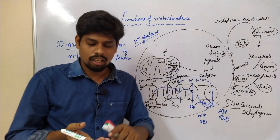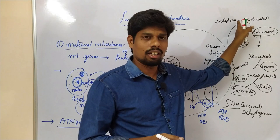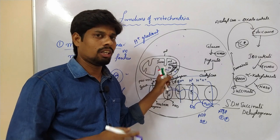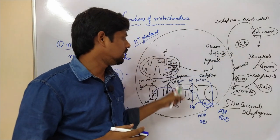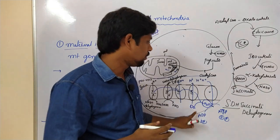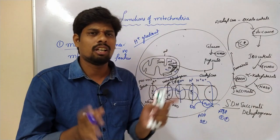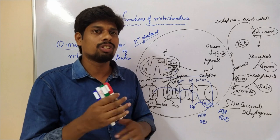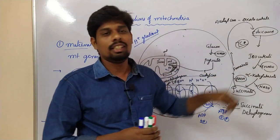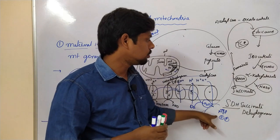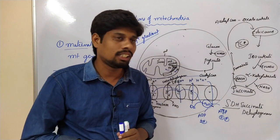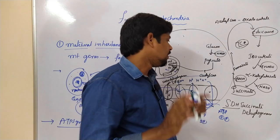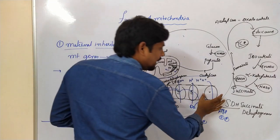Carbohydrates are broken down into glucose, which enters glycolysis, then the mitochondria where the TCA cycle occurs, then the electron transport system, producing water and ATP. Lipids enter the TCA cycle through different mechanisms but follow the same pathway to produce ATP. Notably, lipids produce more energy than carbohydrates.